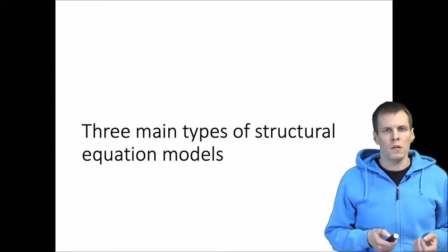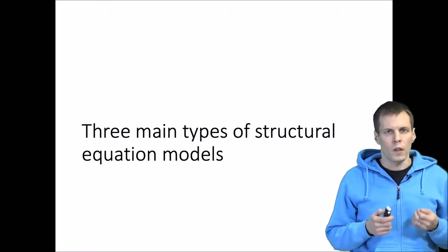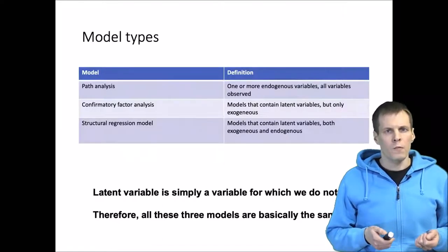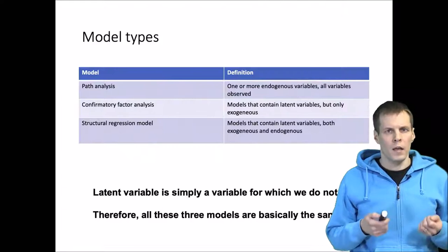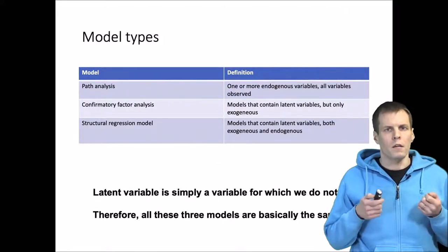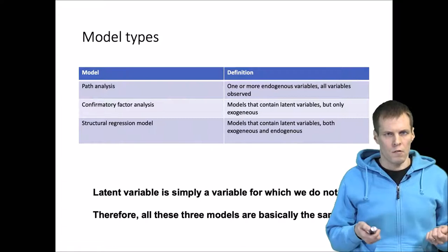Books on structural regression modeling typically present a typology of three different models. These three different kinds of models are the path analysis model, the confirmatory factor analysis model, and the structural regression model.